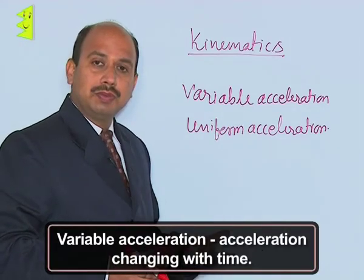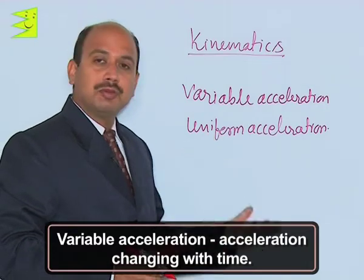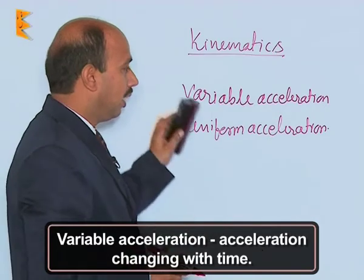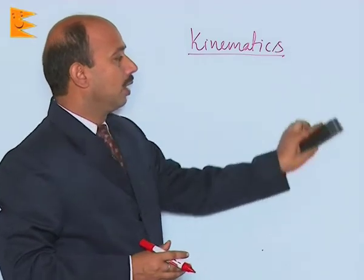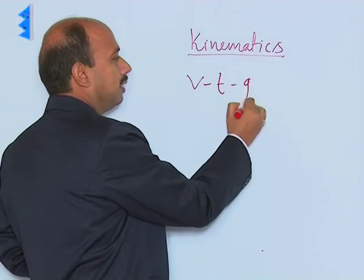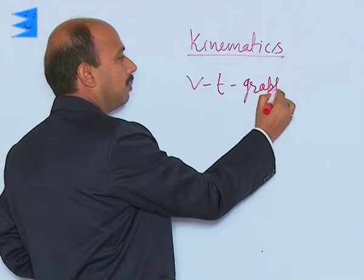Just like we have done with variable speed and uniform speed, similarly we are doing here variable acceleration and uniform acceleration. Now we will come to the V-t graph. Suppose you have taken a velocity-time graph for this.